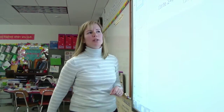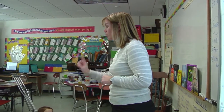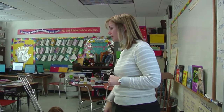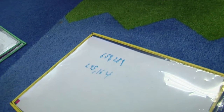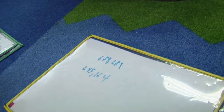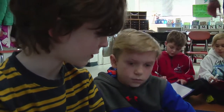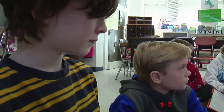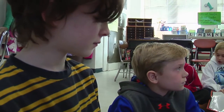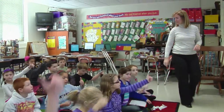Now, can you write 245,164 ones in standard form? Don't erase — add a new number. When you think you have it, check with your neighbor. 245,164. Thumbs up if you and your partner both have it.